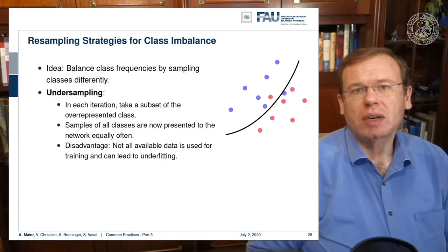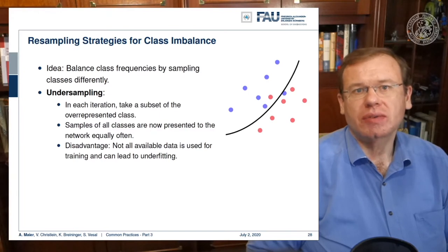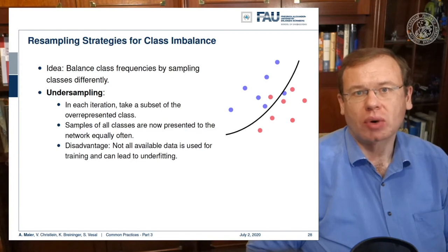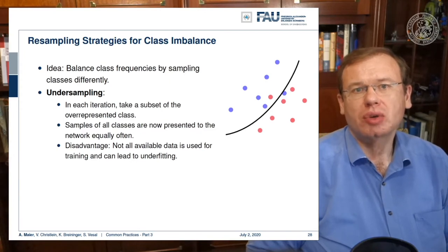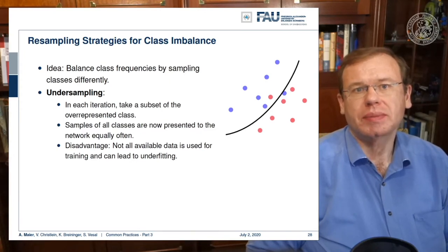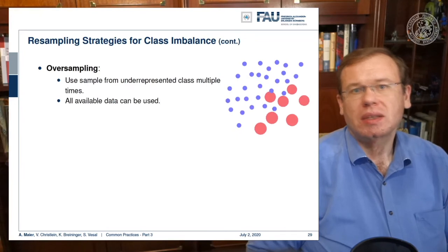Now both classes are seen approximately as frequently as each other. The disadvantage of this approach is that you are not using all the data that has been recorded, and of course you don't want to throw away data.